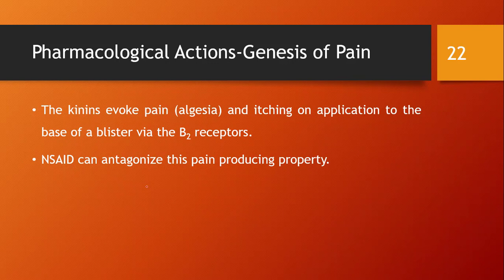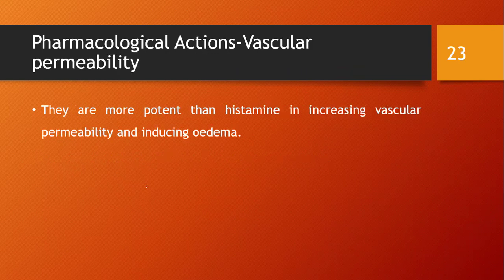Regarding pain, kinins evoke pain (algesia) and itching on application to the base of a blister via B2 receptors. NSAIDs antagonize this pain-producing property of bradykinin. Regarding vascular permeability, kinins are more potent than histamine in increasing vascular permeability and inducing edema.